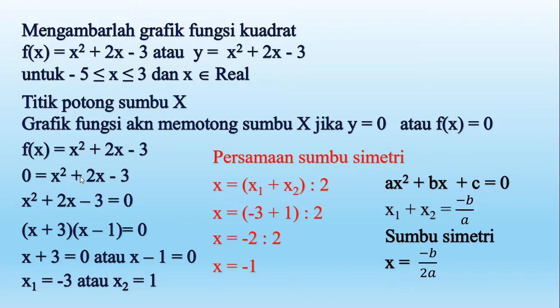Kalau kita sudah dalam bentuk ax kuadrat tambah bx tambah c sama dengan 0, maka ingat kembali bahwa x1 ditambah x2 yaitu -b/a. Maka persamaan sumbu simetrinya kalau kita hubungkan dengan fungsi utamanya tadi yaitu x sama dengan -b/2a.